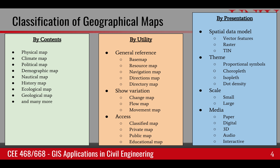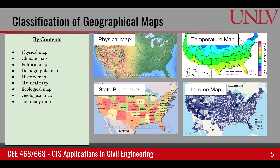There are many types of maps you will come across, and while there is no general classification, I have grouped them into three types: by contents, by utility, and by how the information is presented. Looking at contents, we have a wide range of maps. One of the most common is a physical map, which describes the physical surface of the ground — showing rivers, mountains, and land and ocean.